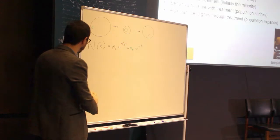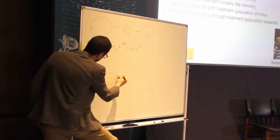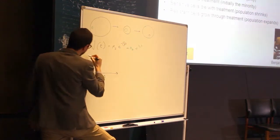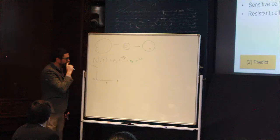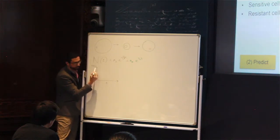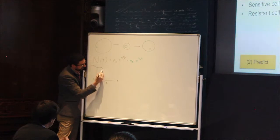Now if you draw the dynamics, and you ask the question, if I put time here and I put proportion of cancer cells here, what you have is that the sensitive population, which originally is dominant, decays exponentially. So it disappears.